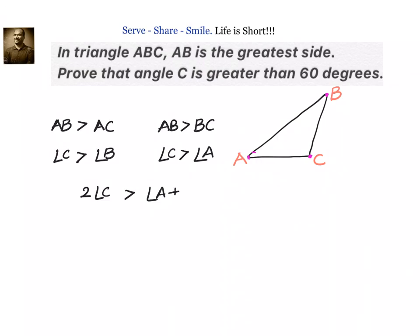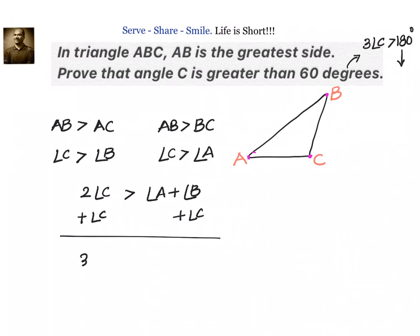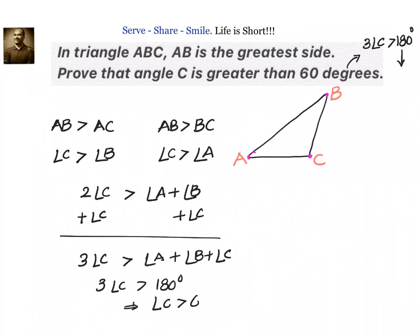Can we club these two together and write down: two times of angle C is greater than angle A plus angle B? Now, what do we need to prove? We need to prove that angle C is greater than 60 degrees, which means we have to prove three times of angle C is greater than 180 degrees. We know the sum of angles of a triangle is 180 degrees, so let us add one more angle C on both sides. Then we have three times of angle C is greater than angle A plus angle B plus angle C, which equals 180 degrees. Therefore, angle C is greater than 60 degrees.